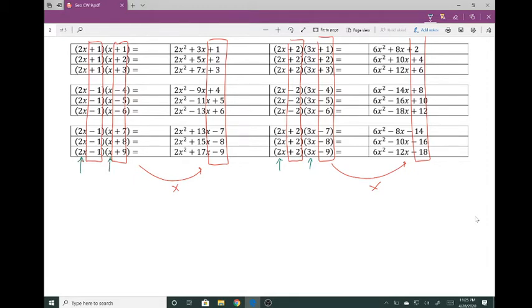Because if you look at FOIL, there are two terms that are added together. So I'm going to take one example here, namely this example. So if I look at 2x plus 2 times 3x minus 9, this is going to give me 6x² - 18x + 6x - 18.